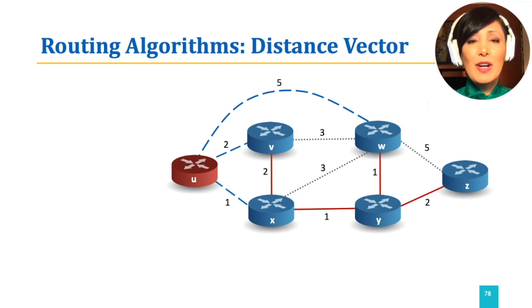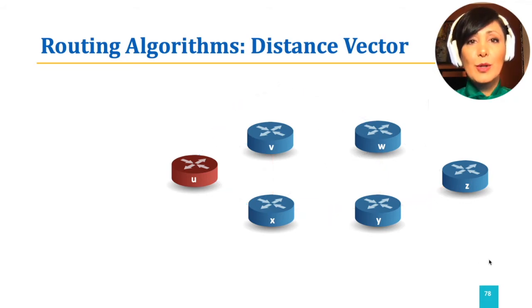Suppose we want to find a path from node u to node z in the depicted network. The direct neighbors of node u are v, x, and w. So, node u starts by what it has, which is the link costs to its neighbors v, x, and w.